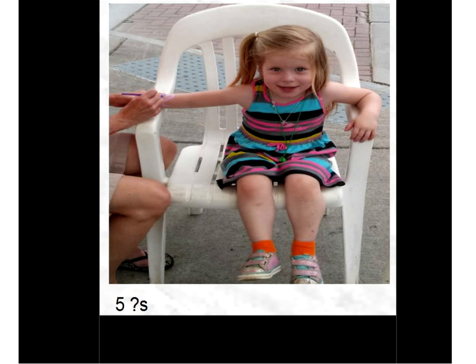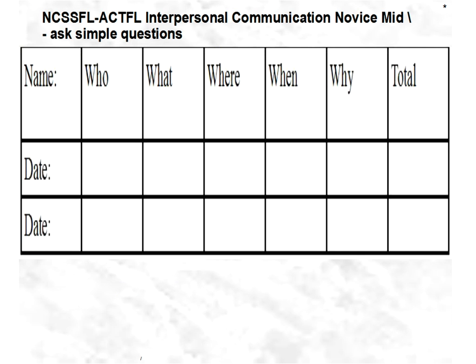You can do this in English or, if you're a modern language teacher, in a modern language. I'd like you to ask different questions about a picture using different question words. Every time you say a different question word, record a slash under that question word. So if you ask a 'who' question, put a slash under who; if you ask a 'where' question, put a slash underneath there.